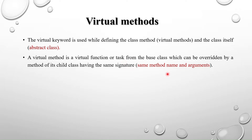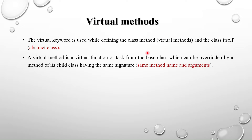If you use the virtual keyword with the display function in the base class, you will get the child class method instead, because the virtual keyword allows overriding. The child class will override the base class method. We use this virtual keyword in the polymorphism concept — in order to perform polymorphism we use the virtual keyword.